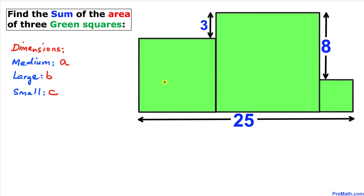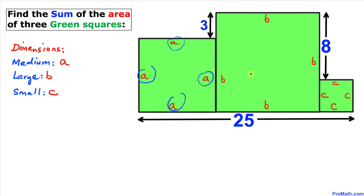Let's go ahead and label the dimensions of these squares. I'm going to label the medium square with side length a, the large one with side length b, and the small square with side length c. Since we are dealing with squares, all sides of the medium square are a, the large square are b, and the small square are c.